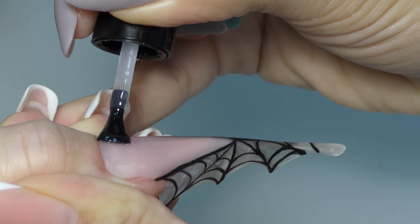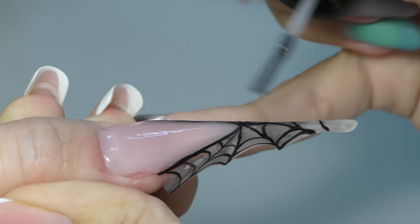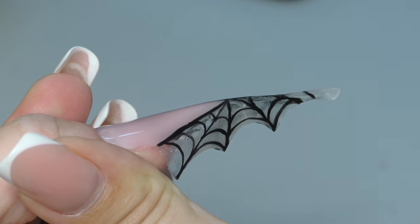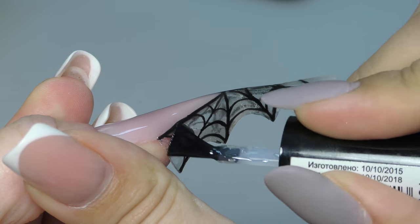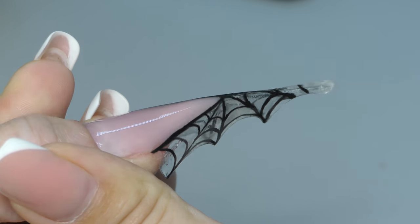Then I apply the top coat. I'm using no cleanse top coat for gel polishes or you can also use the gel one. Make sure you cover the entire web including all the sides, one side and the other one.